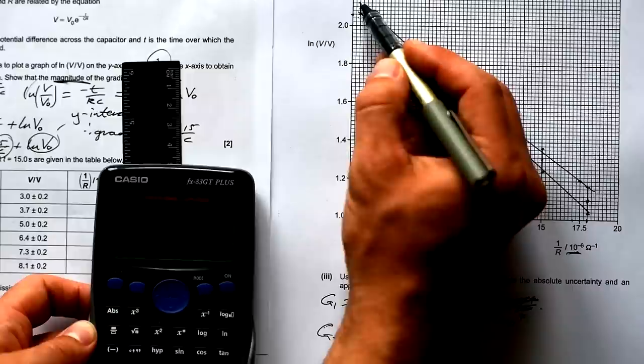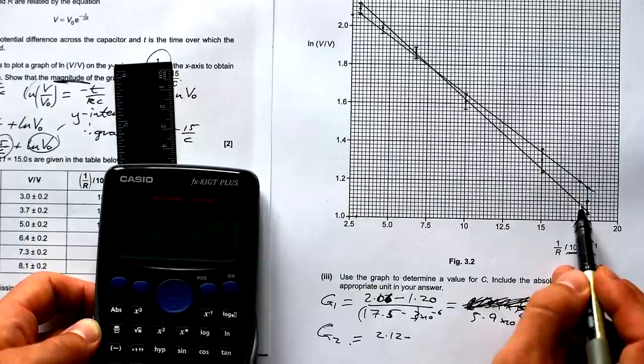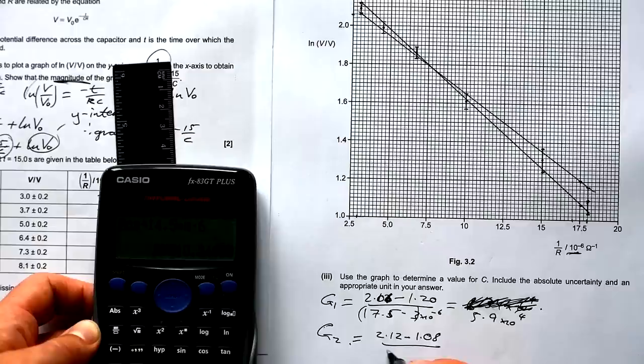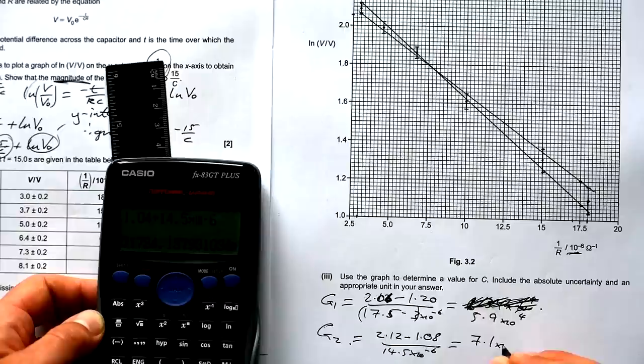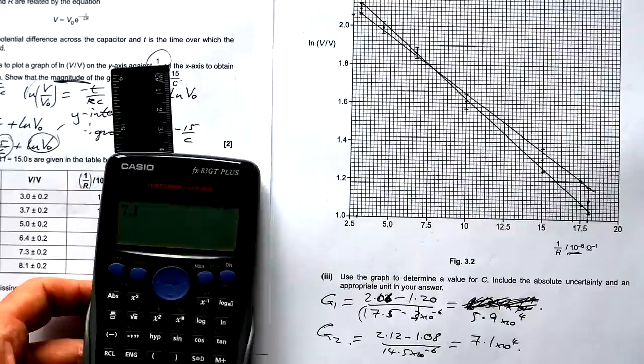But we have to be careful because this 1 over R is actually 2 to the power of times 10 to the minus 6. So we have to add that on there as well. So 2.06 take away 1.2 divided by 14.5 times 10 to the minus 6. That gives us 5.9 times 10 to the 4. Let's find out our highest gradient now. So we're going from 2.12 down to, should we put the same point? Yes, why not? Let's go to there as well. So that is 1.08 divided by again that 14.5 times 10 to the minus 6. So it's going to be 1.04 divided by 14.5 times 10 to the minus 6. That gives us 7.1 times 10 to the 4 this time.